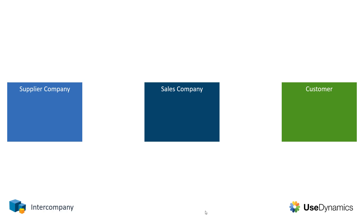For example, you have a sales company and you have a supply company. Your supply company could be where you have your inventory and your manufacturing, and your sales company will handle all of your sales to your customer.